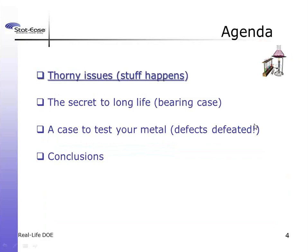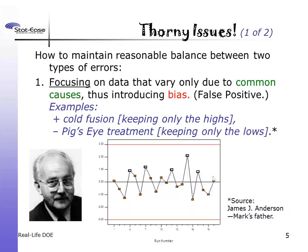Let's talk about various thorny issues — stuff that can happen. Basically there are two major issues in terms of maintaining a reasonable balance between two types of errors. One thorny issue is that you focus only on data that vary due to common causes, thus introducing bias. Bias is a very bad thing — one of the dirtiest four-letter words in statistics.